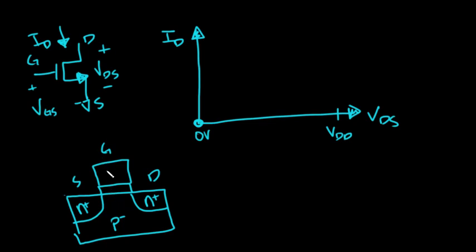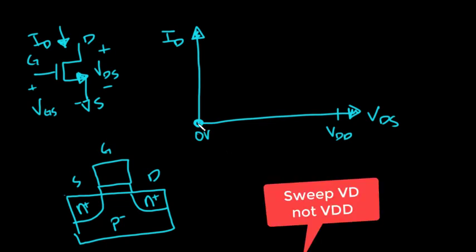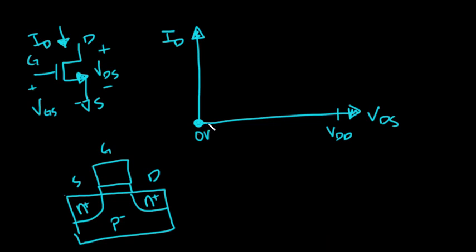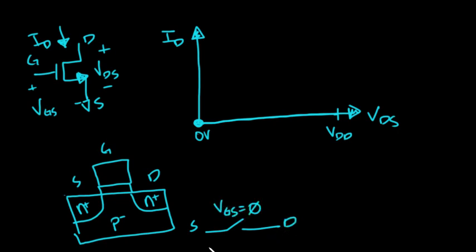Initially, when there's no gate voltage applied, the region in between the source and the drain is a high-resistance region and there's no current flowing. So it doesn't matter if I sweep VD from zero all the way up to the supply voltage — ID is equal to zero this entire time. There's no current flowing. This is like an open switch: here's my source, here's my drain, and for VGS equal to zero, the MOSFET looks like an open switch.